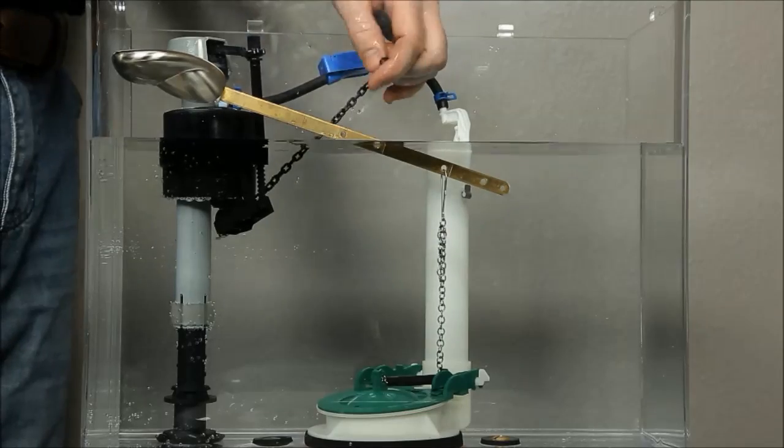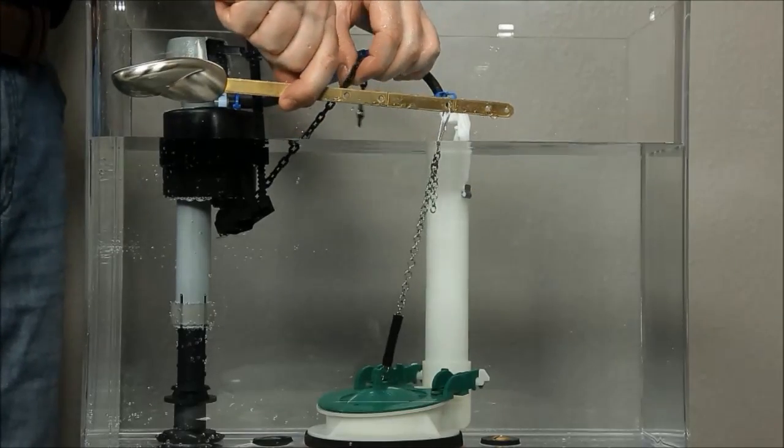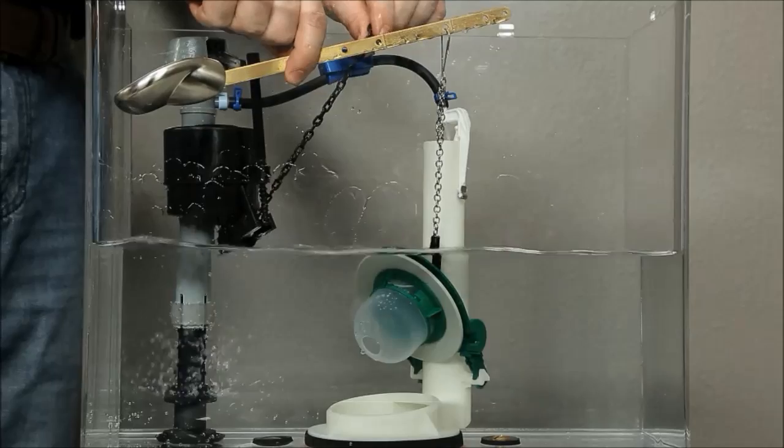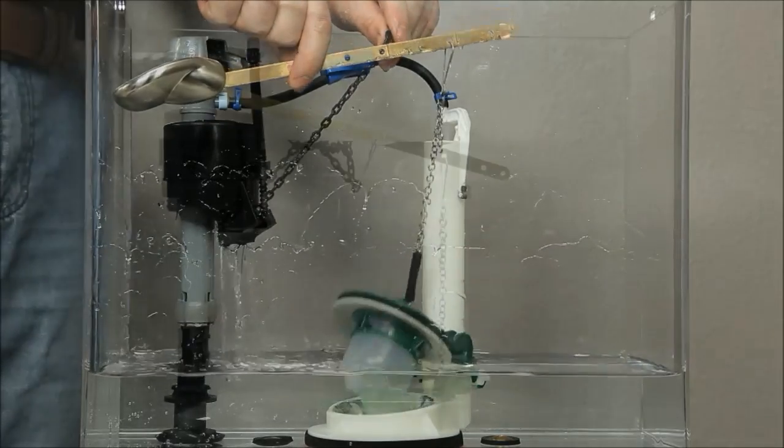Remove the clip from the end of the chain. Lift the tank lever arm to the top of the tank. Connect the leak sentry chain to the arm so that it is taut.